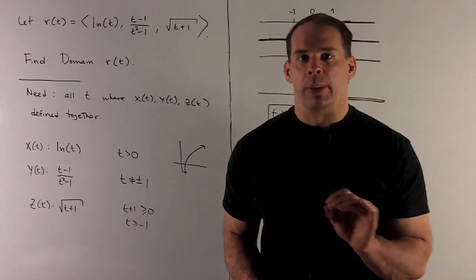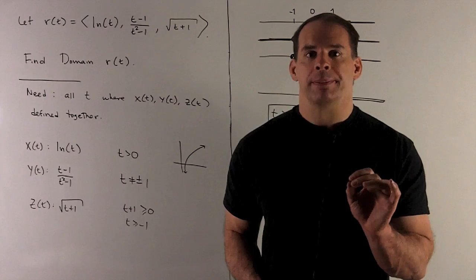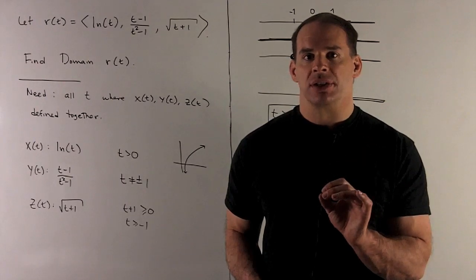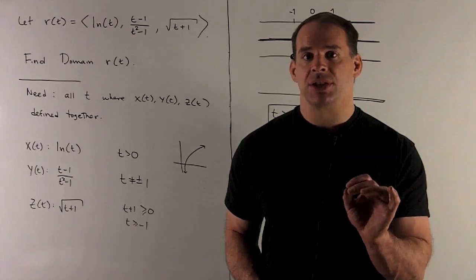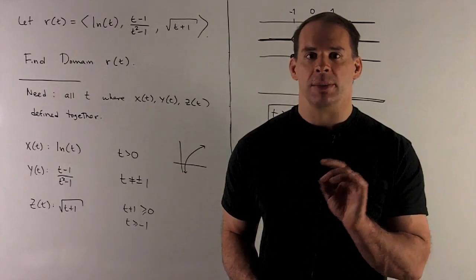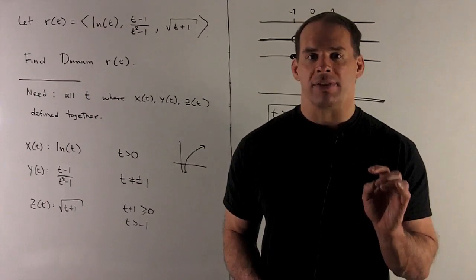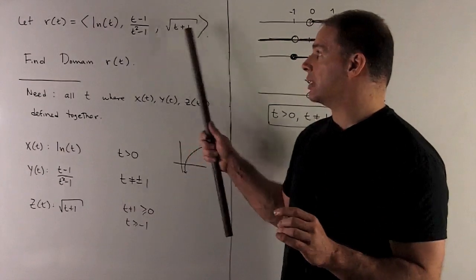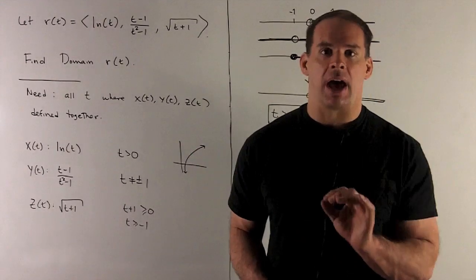So, how do we find the domain? For r(t), if I put a t in there to get something out that makes sense, we're going to have to get something that makes sense for each of the coordinate functions. So that means to be in the domain of r(t), we're going to have to be in the domain of each of x(t), y(t), and z(t). So each of these, all at the same time.